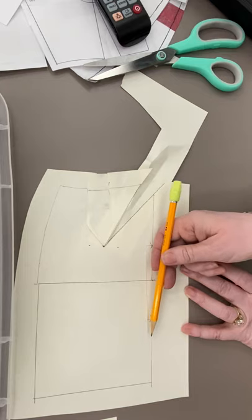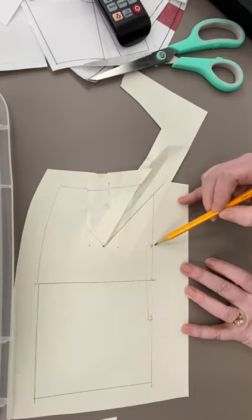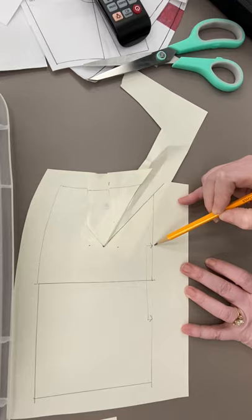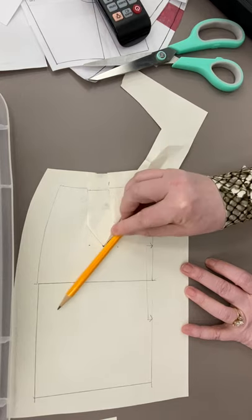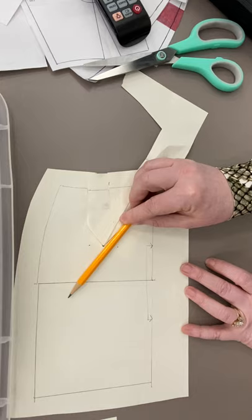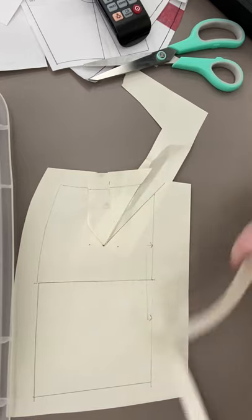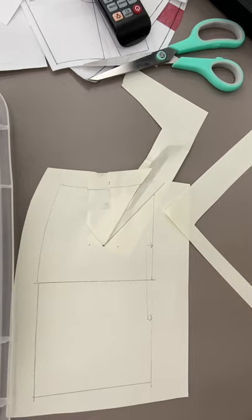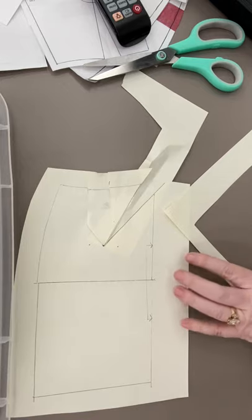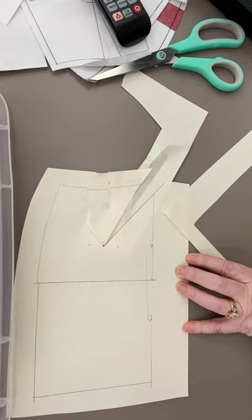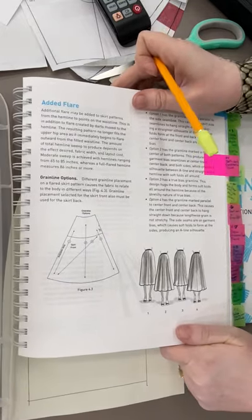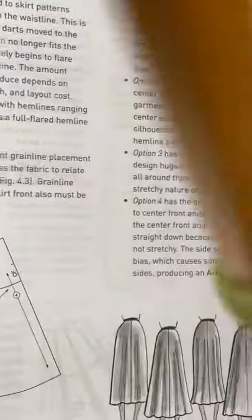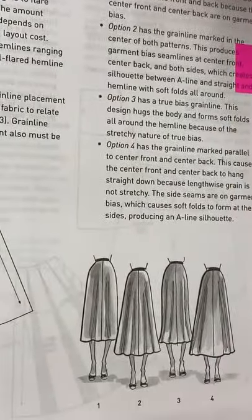Where is my grain line going? Am I keeping my grain line parallel with the center front? If I'm putting it on the fold and I'm doing that then this fold line mark is your grain line. What if you want your grain line on the bias? What if you want it to mimic this 45 degree angle and this is your grain line? You choose that but that changes your aesthetic.